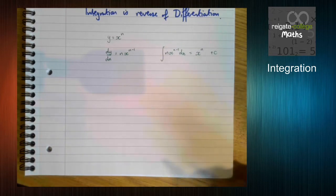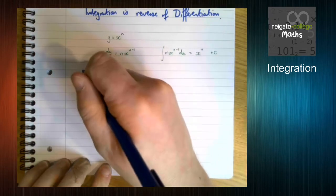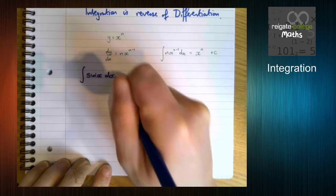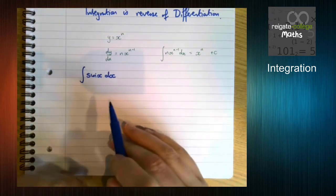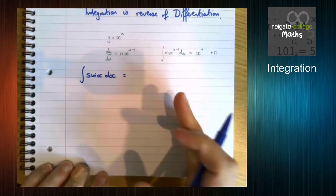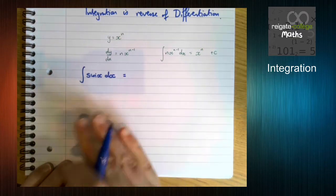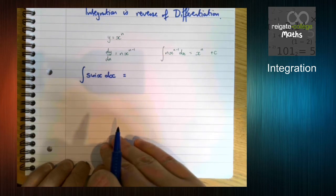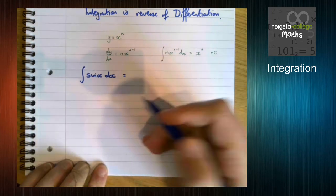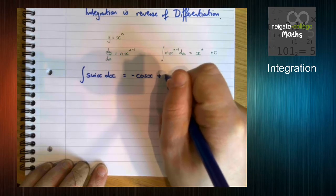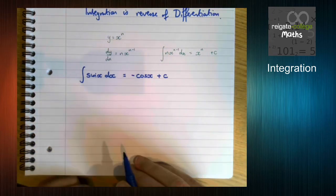So thinking about the sine and the cos differentiation, we can do that in reverse if we integrate sine x. So we've got to think, well, what did we differentiate to get sine x? Well, cos x differentiates to minus sine x. So therefore, minus cos x will differentiate to sine.